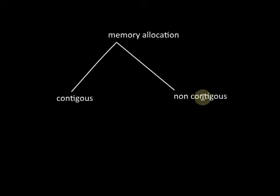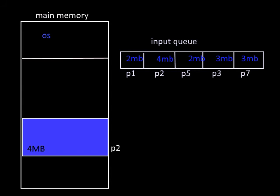In contiguous memory allocation, we place a process in the main memory in a contiguous fashion. That is, if we have a process of 4MB residing in the secondary memory, the 4MB will be loaded to the main memory in a contiguous fashion. It will be loaded to one particular address space and will be placed together - we won't be able to split the process. This is called contiguous memory allocation.